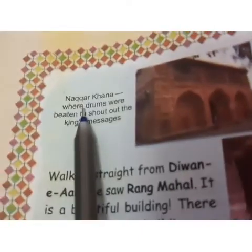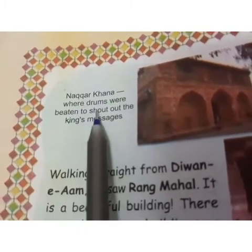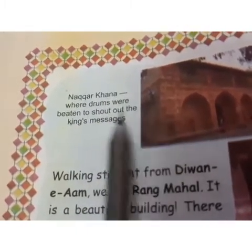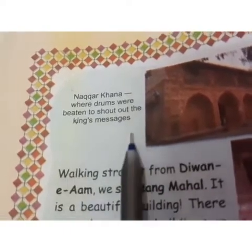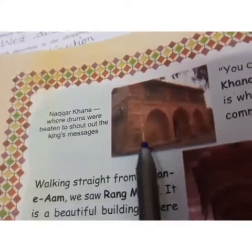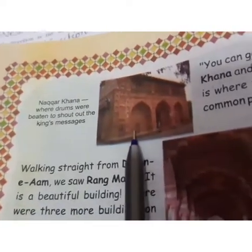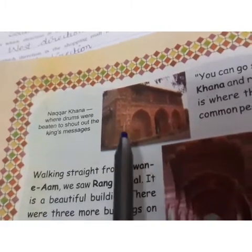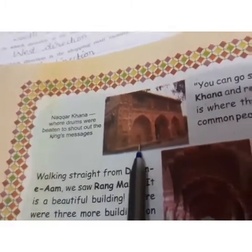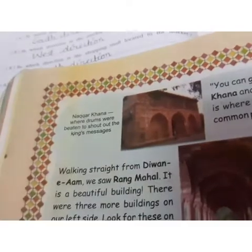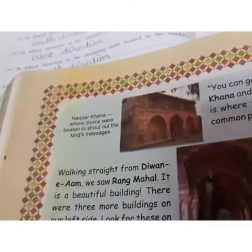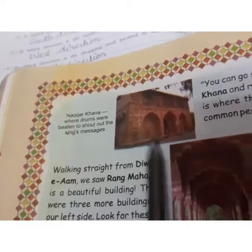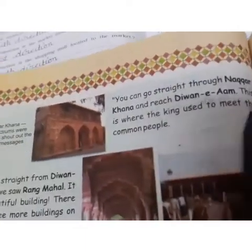Nagar Khana is where drums were beaten to announce the king's message. In ancient times, when kings wanted to pass a message to the public, they would beat drums (nagare) at the Nagar Khana. That entire place is called the Nagar Khana — it is where the king's message was passed down to the public.